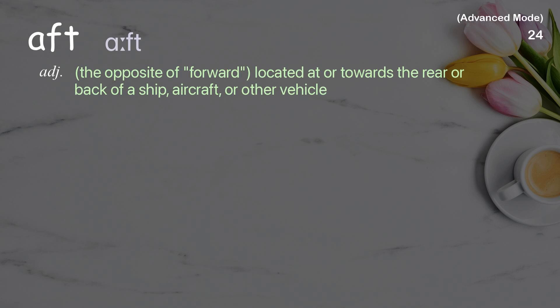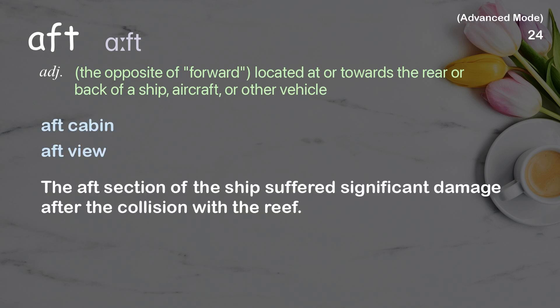Aft: the opposite of forward; located at or towards the rear or back of a ship, aircraft, or other vehicle. Examples: aft cabin, aft view. The aft section of the ship suffered significant damage after the collision with the reef.